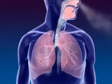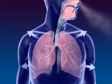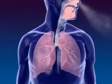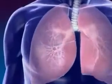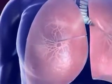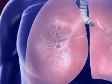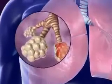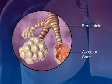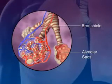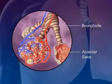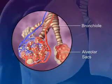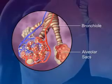Lungs are spongy tissue with alveoli and blood capillaries. Breathing occurs because of the expansion and contraction of the lungs. The bronchi carrying the air subdivide into smaller branches called bronchioles. At the end of each bronchiole are the alveolar sacs, which are surrounded by blood capillaries and contain millions of single-layer alveoli cells where gas exchange takes place.